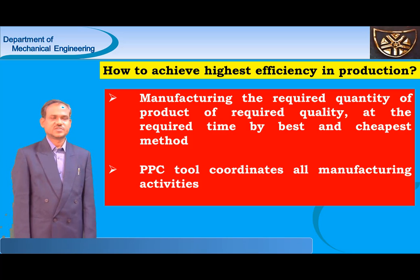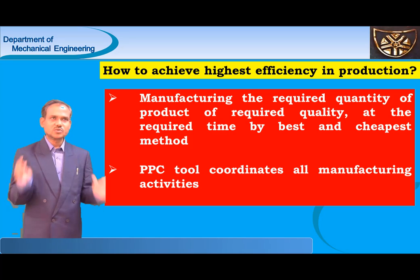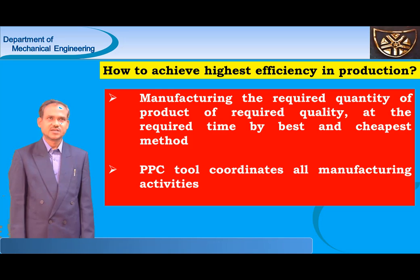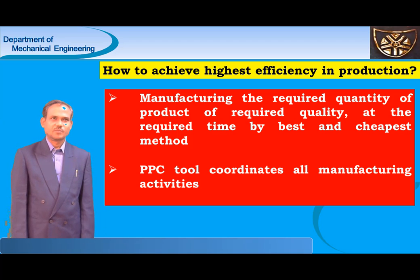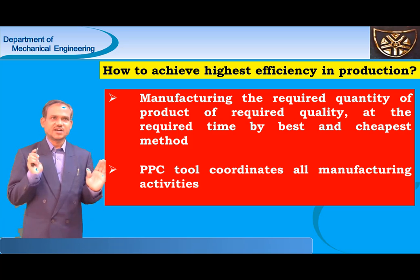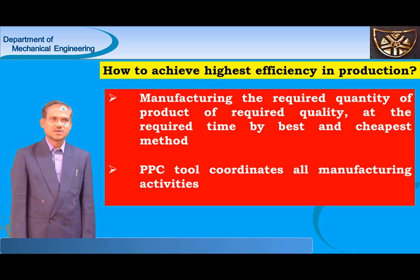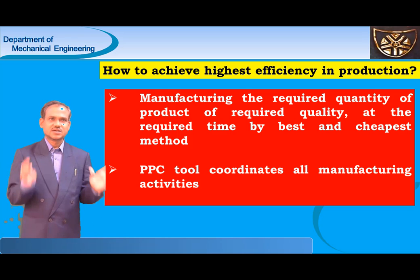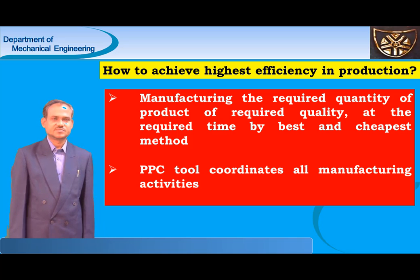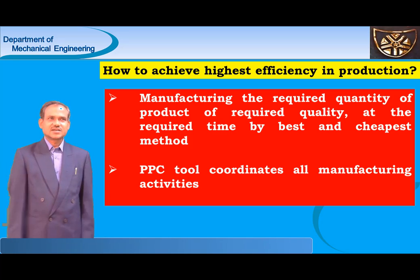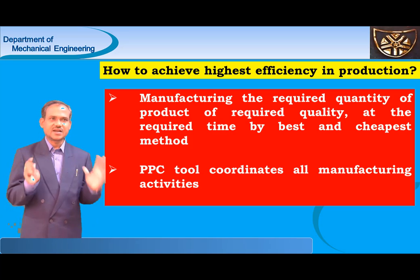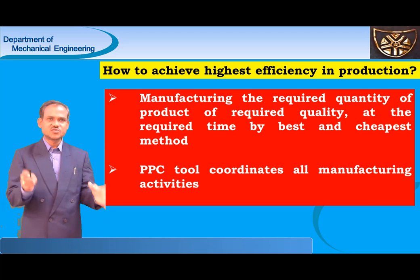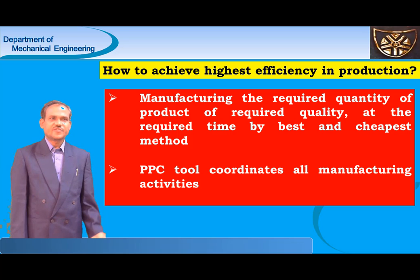I would like to explain about how to achieve highest efficiency in production. The highest efficiency in production is obtained by manufacturing the required quantity of product of the required quality at the required time by the best and cheapest — meaning most economical — method. To attain this goal, management employs production planning and control. Therefore, it is one of the tools used to coordinate all the manufacturing activities.